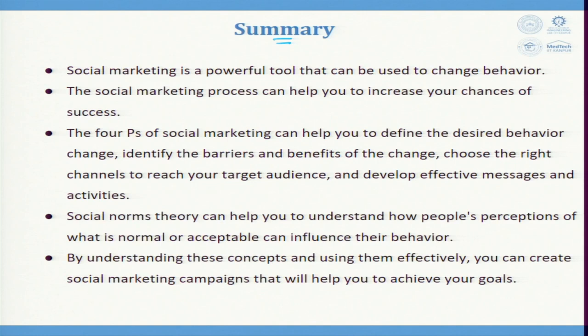In summary, social marketing is a powerful tool that can be used to change behaviour. The social marketing process can help increase your chances of success. The four P's help define the desired behaviour change, identify barriers and benefits, choose the right channels to reach your target audience, and develop effective messages and activities. Social norm theory helps you understand how people's perceptions of what is normal can influence their behaviour. The assignment is to look at more case studies that have a social impact under behavioural theory.